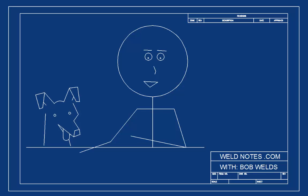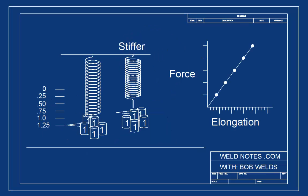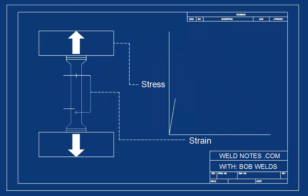Notice that if we had a stiffer spring, the line would be steeper and it would stretch less. When we ran our tensile test in the first video, the bar was acting like a very stiff spring.